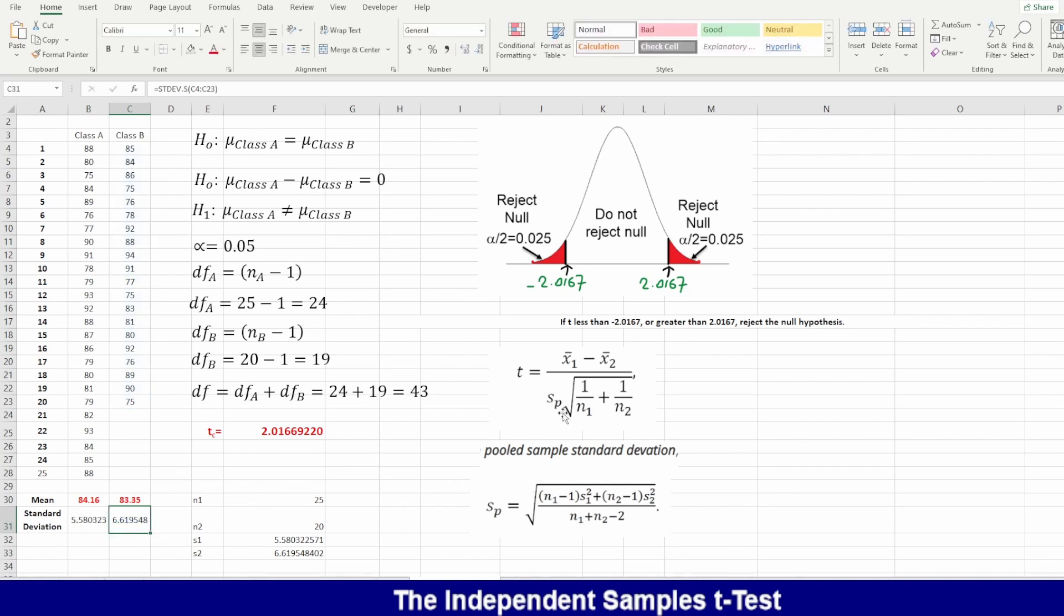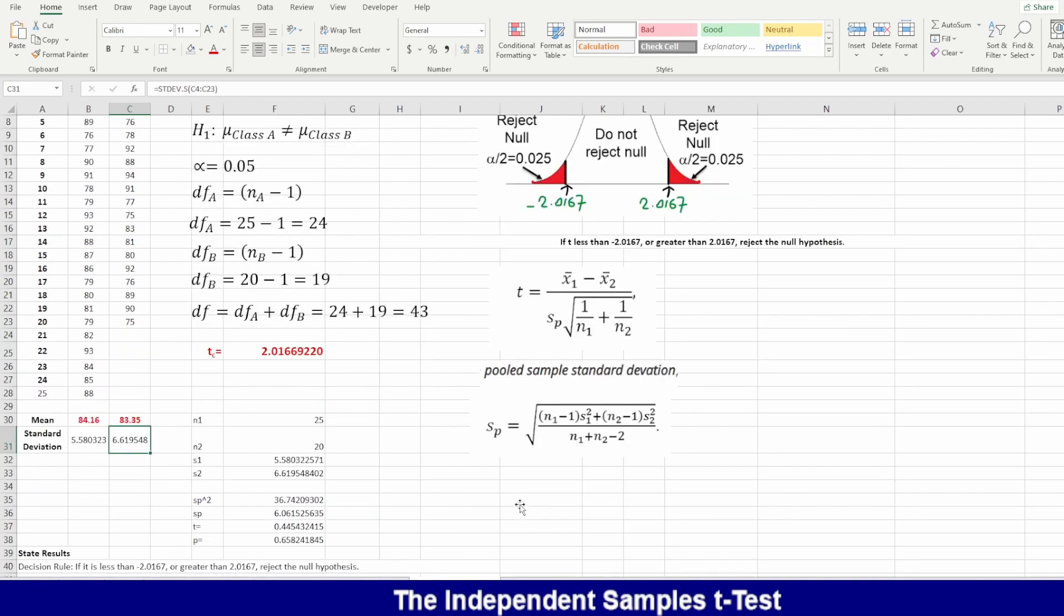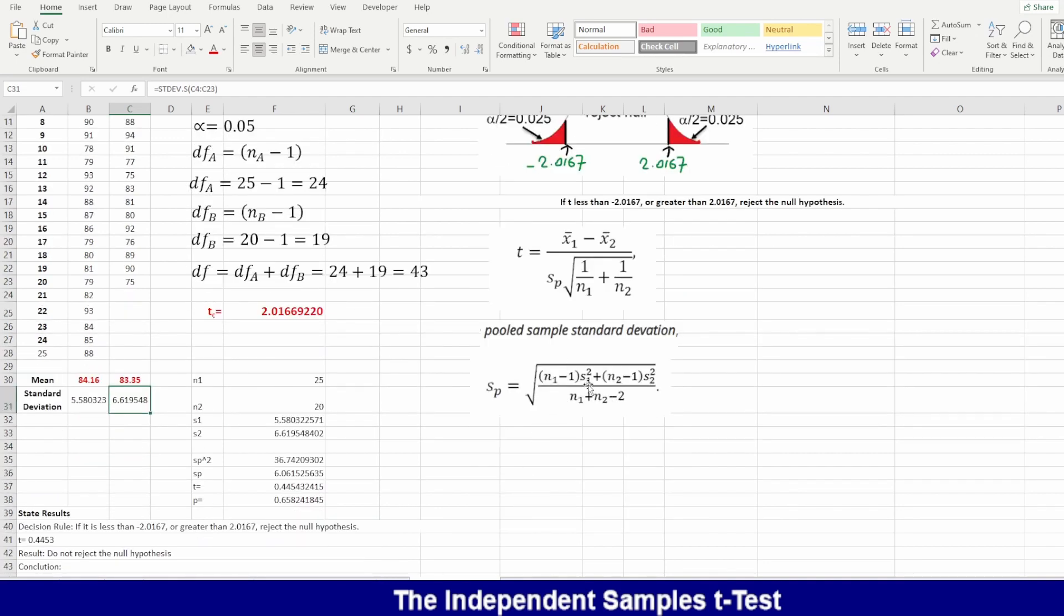To calculate t, I need to have sp, which is the pooled sample standard deviation. I will calculate this one first before I calculate the t-test. N1 for class A is 25 and N2 is 20. The standard deviation is taken from here and the other standard deviation is taken from here.